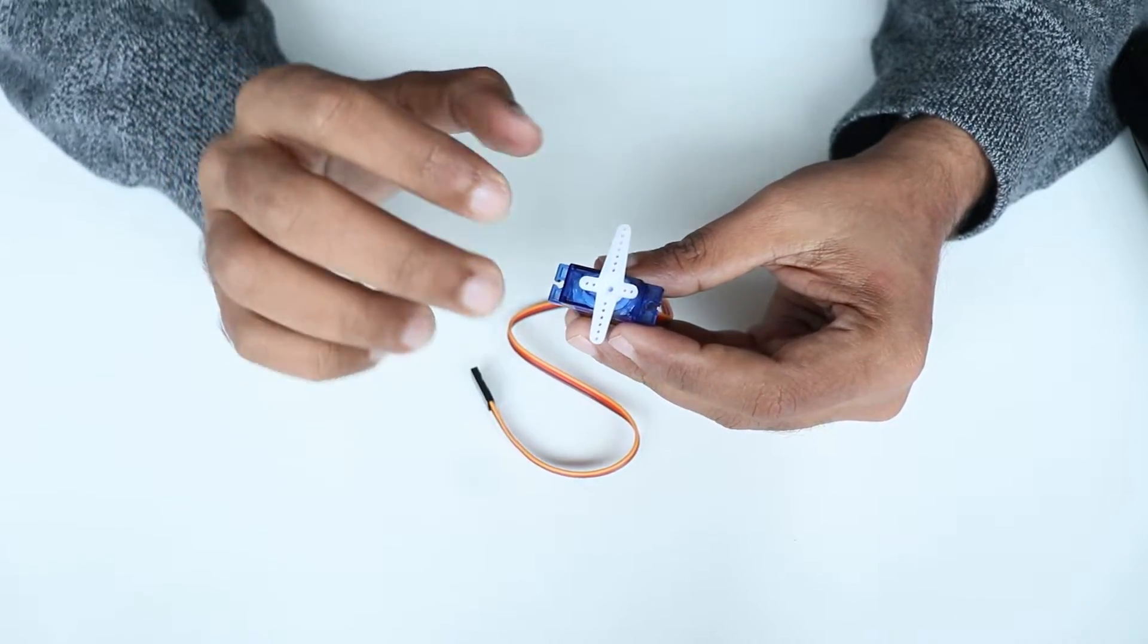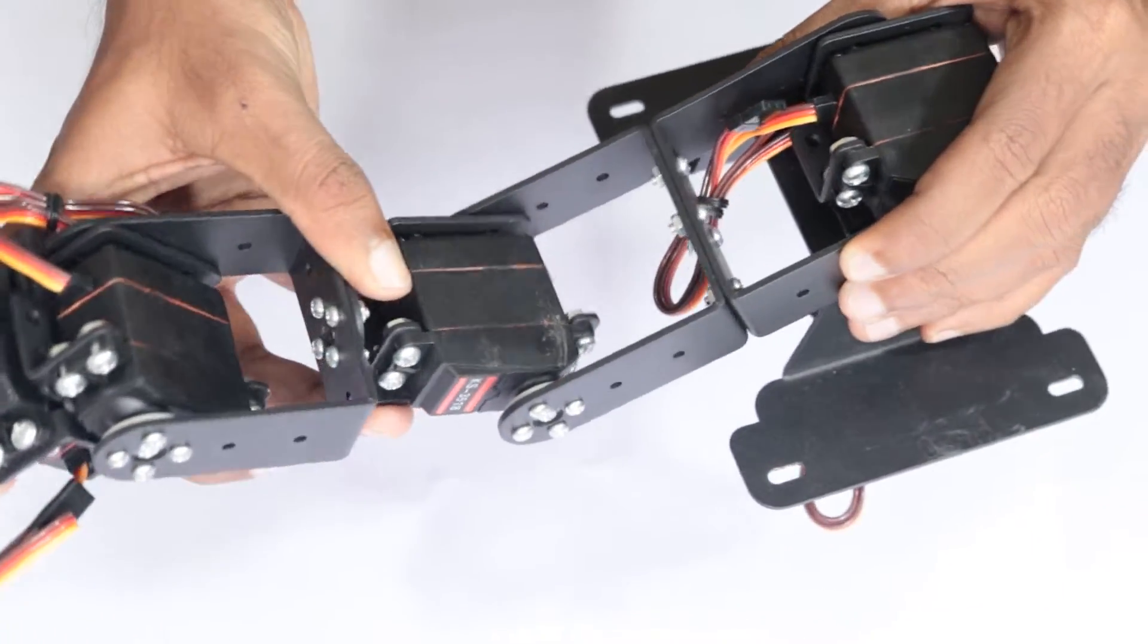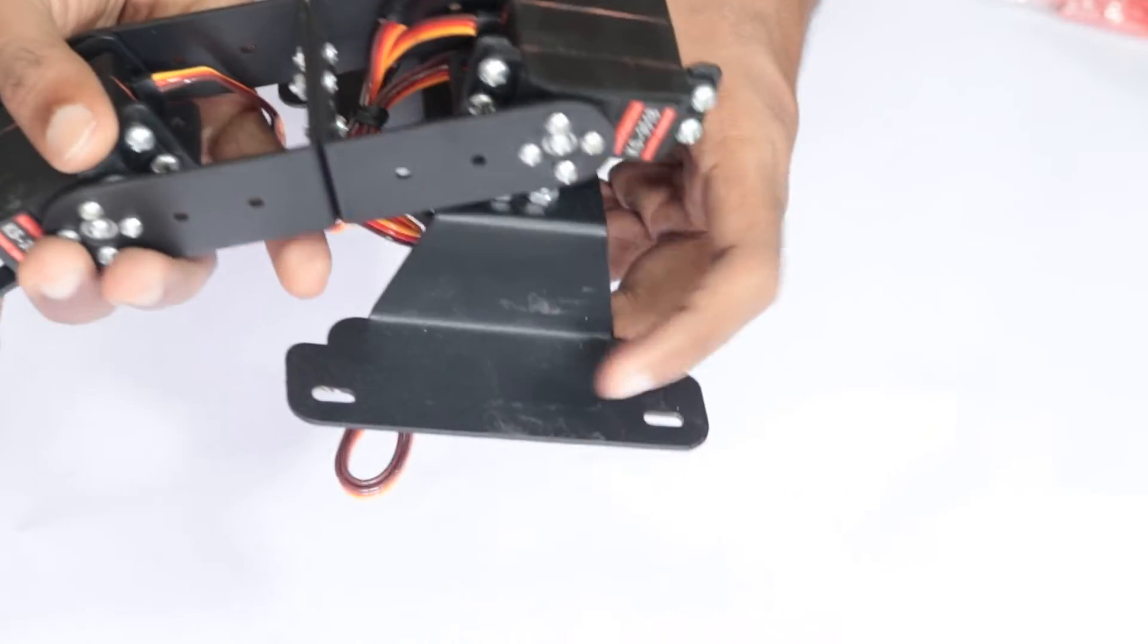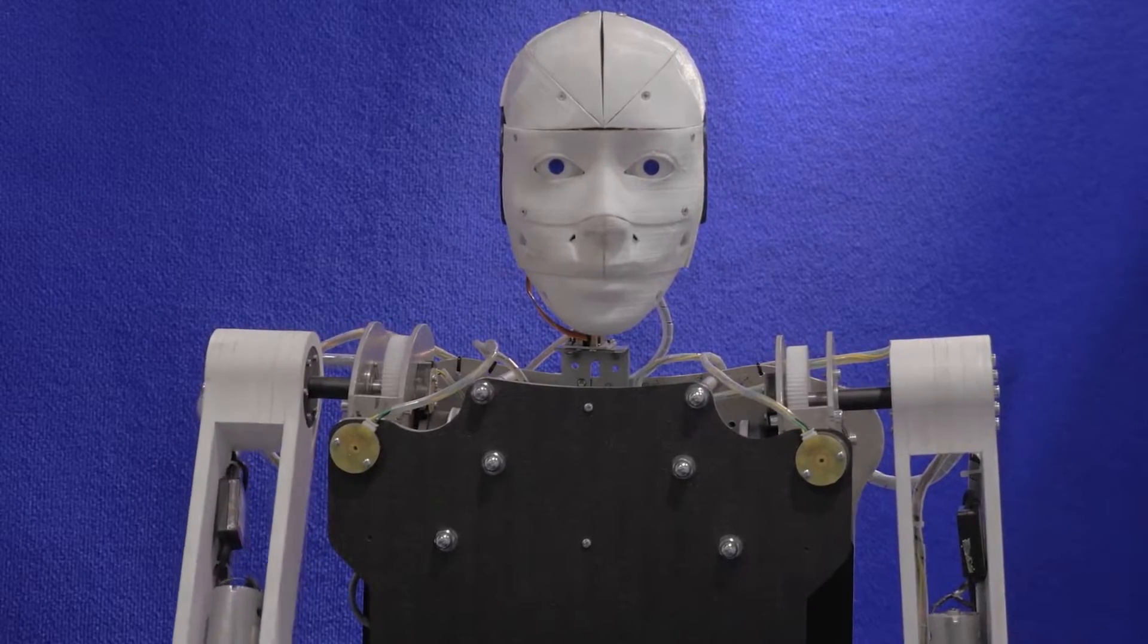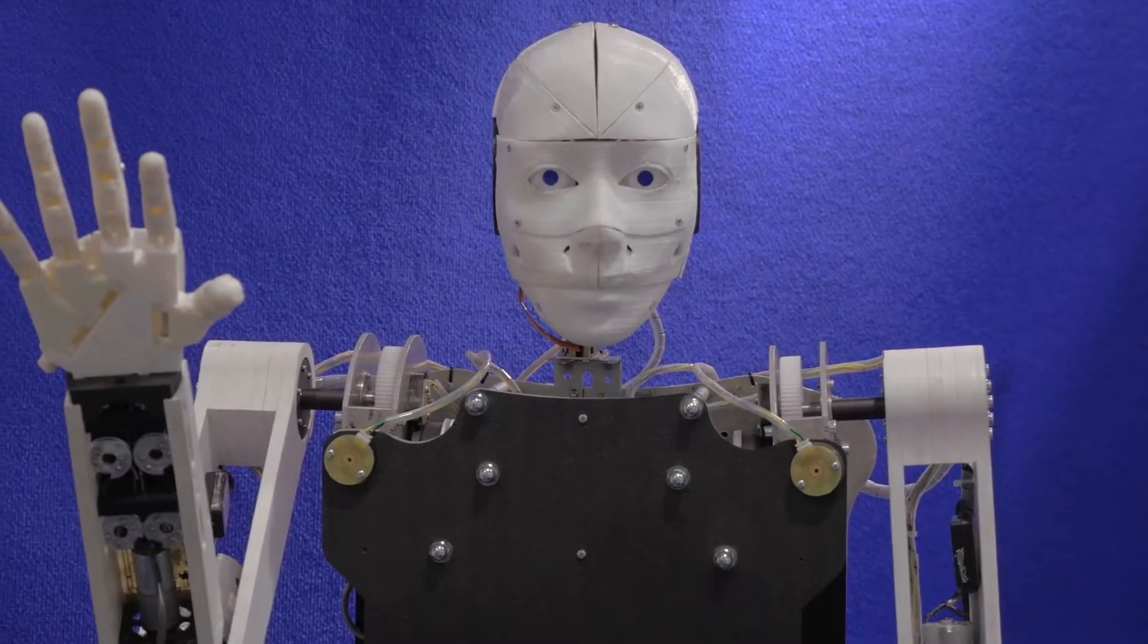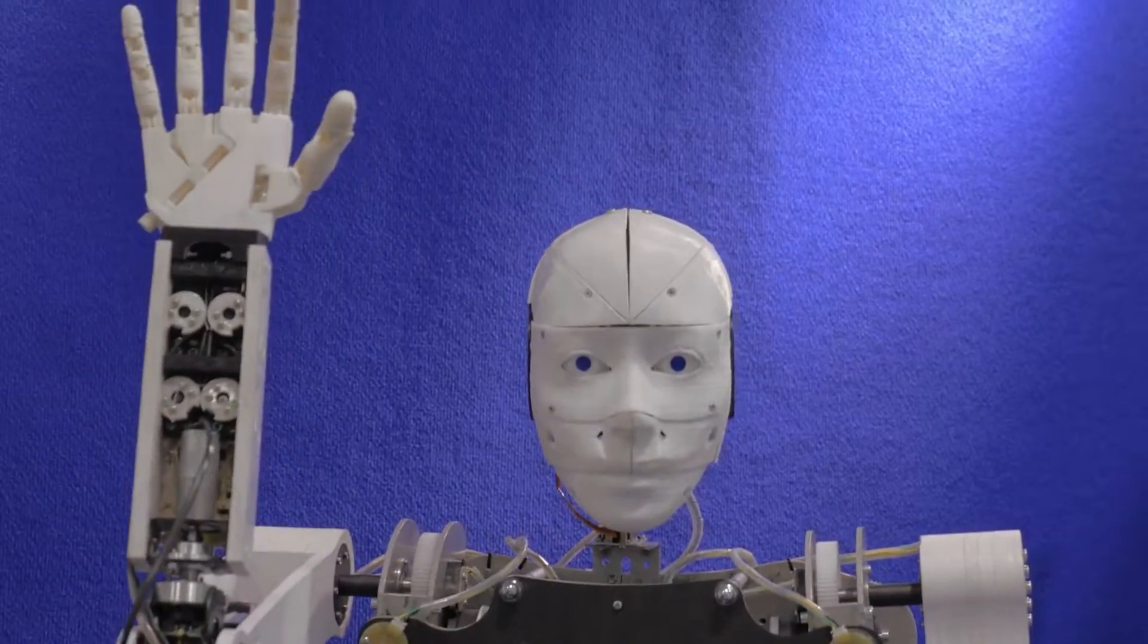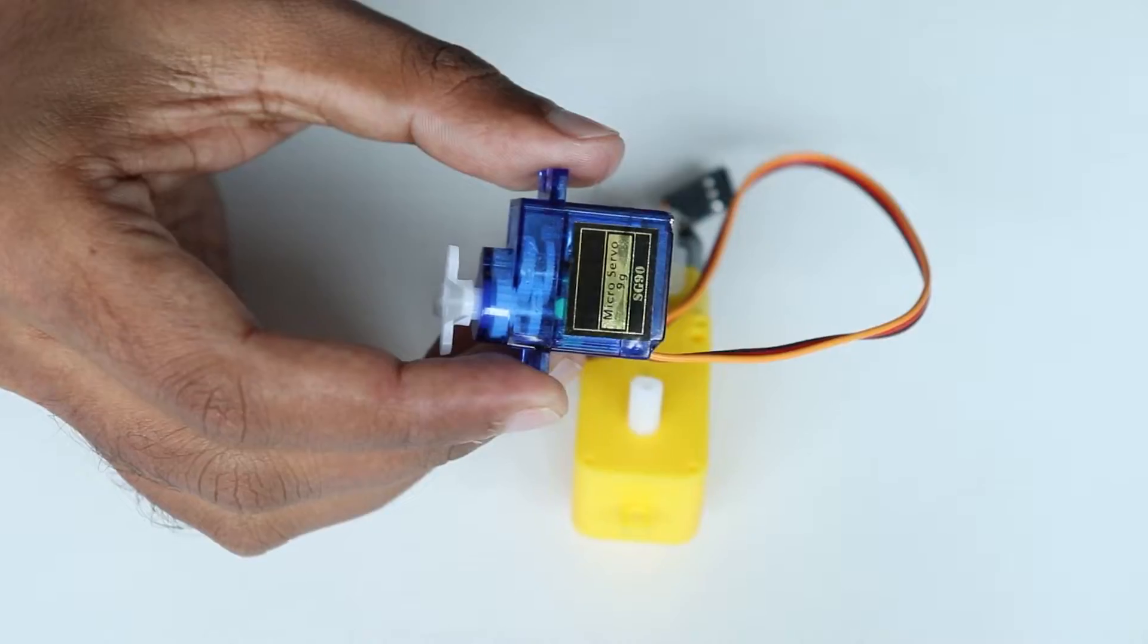These motors are commonly used in projects where we do not need complete 360 degree movement but instead precise movements to a particular angles. Best example is robotic arm. In the case of robotic arm we can use this kind of motor to connect different moving parts of the arm.